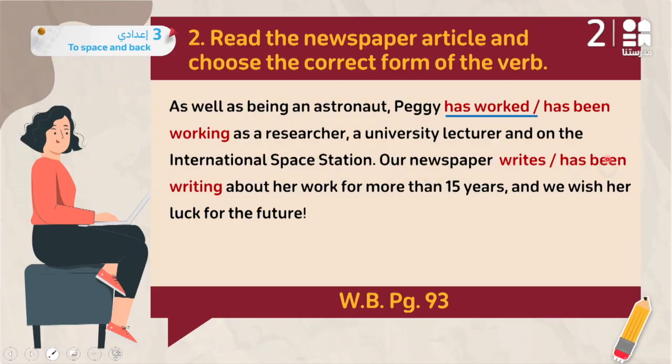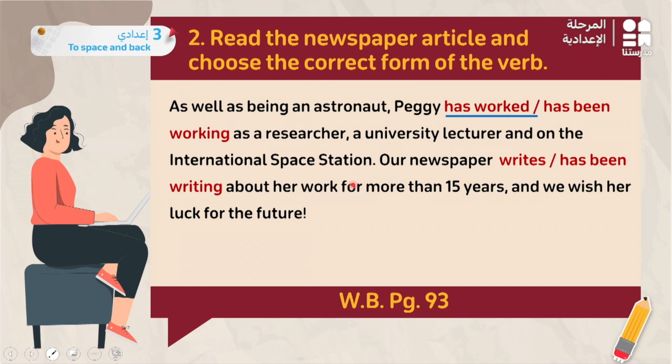'Our newspaper writes / has been writing about her work for more than 15 years, and we wish her luck for the future.' The keyword 'for' signals present perfect or present perfect continuous. The newspaper has been writing about her for 15 years and is still writing — an action that started in the past and continues now. That's the present perfect continuous: 'has been writing.'